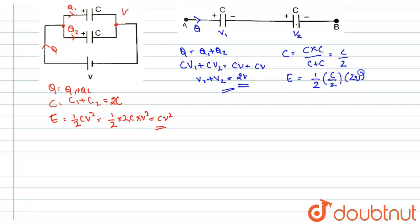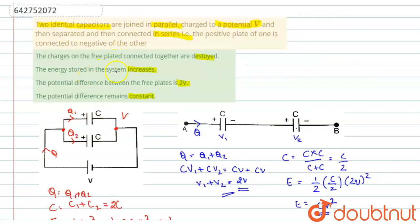So we have energy equals 2 into 2 is 4, and here we have 2 squared that will cancel each other, and hence we have E equal to CV squared. So you can see that energy in parallel combination is same as energy in series combination, as the energy stored in the system does not increase—it is conserved.